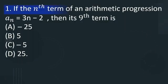The first question is: if the nth term of an arithmetic progression a_n is equal to 3n minus 2, then its 9th term is option A: minus 25, option B: 5, option C: minus 5, option D: 25.